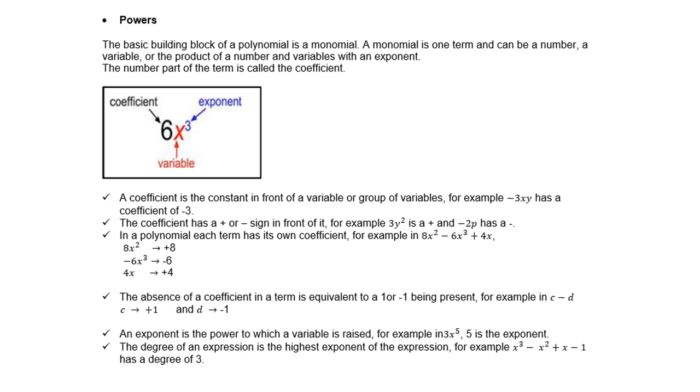The absence of a coefficient in a term is equivalent to a 1 or -1 being present. For example, in c - d, c is +1, and of course -d is -1.